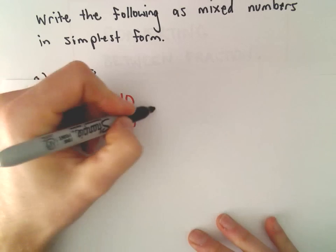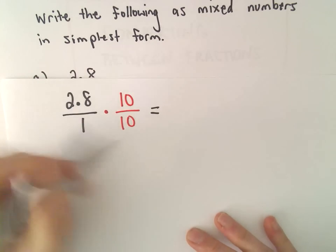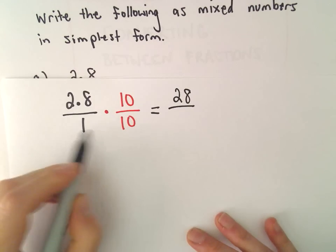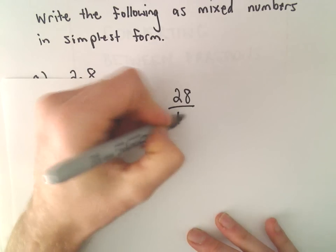Well, 2.8 times 10, again, that just shifts the decimal place. That'll give us 28 in the numerator. And then in the denominator, 1 times 10 is 10.